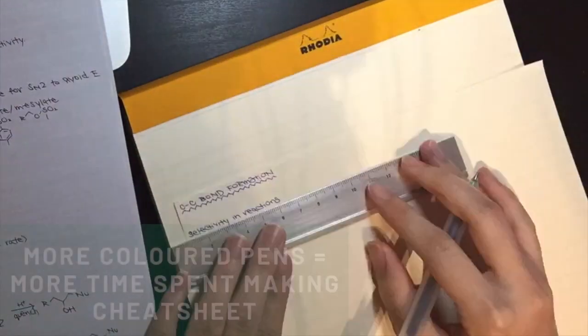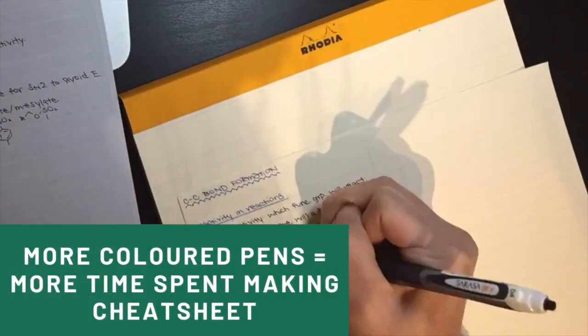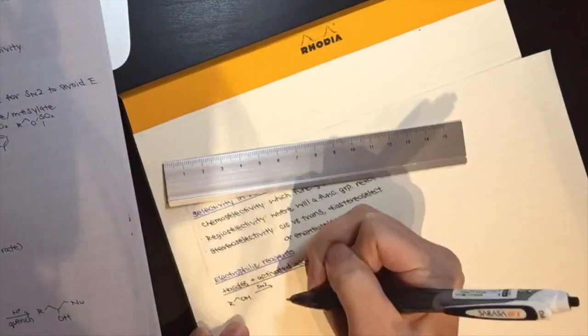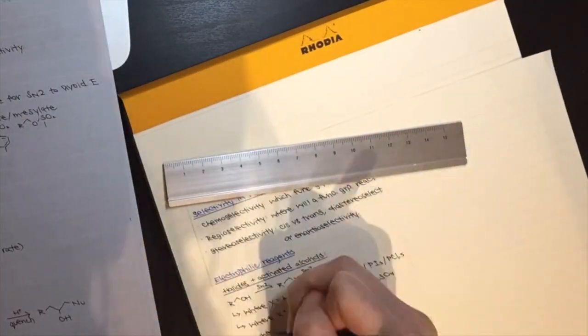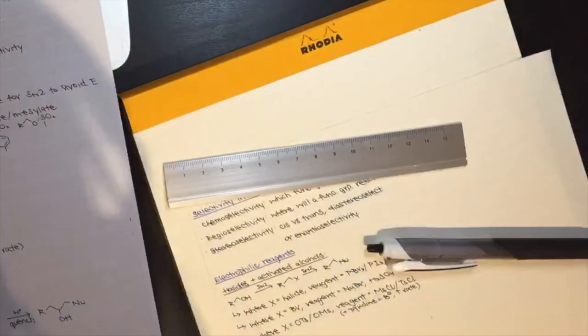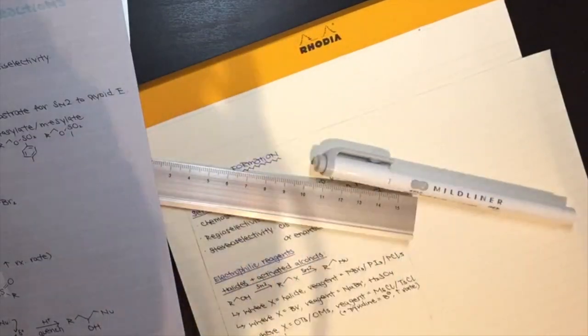When making a cheat sheet, I don't use too many colored pens when writing up, otherwise it would take longer than it needs to be. I personally use a blue Muji pen to write out the title and headers of the summary sheets and a black pen which doesn't smudge when I highlight over it.